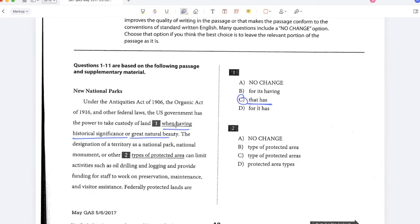When having is not the right construction because when is used for time and I'm not talking about time here, I'm talking about the quality of the land. So option A is not correct. Similarly, for its having is not the right construction and for it has is also not the right construction. I need to choose a concise option that conveys the quality of the land. So C.